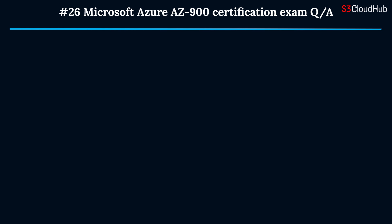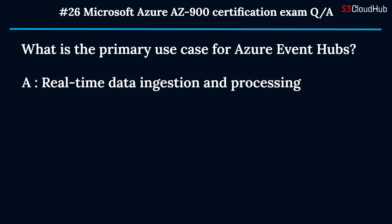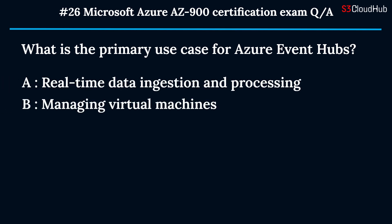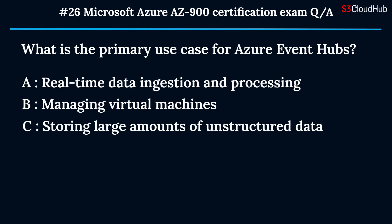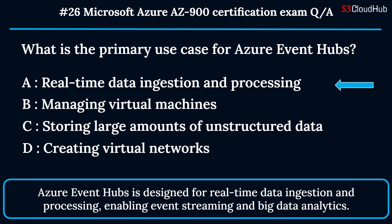The twenty-sixth question: what is the primary use case for Azure Event Hubs? Option A: real-time data ingestion and processing. Option B: managing virtual machines. Option C: storing large amounts of unstructured data. Option D: creating virtual networks. The correct answer is option A. Azure Event Hubs is designed for real-time data ingestion and processing, enabling event streaming and big data analytics.